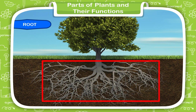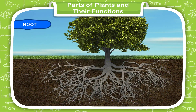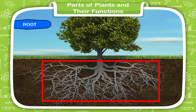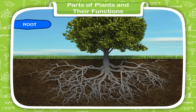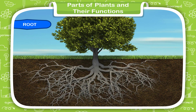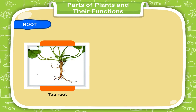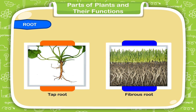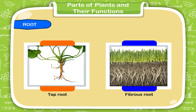Root. The root is the part of a plant which grows under the soil. Different plants have different types of roots. There are two types of roots: taproot and fibrous root. Some plants have taproots, while some have fibrous roots.